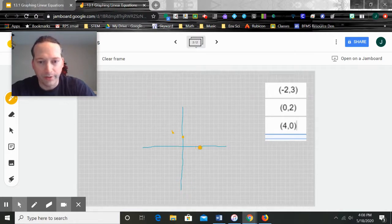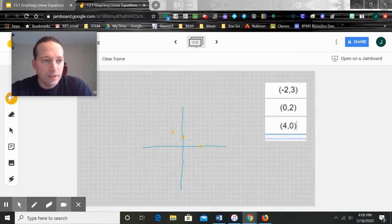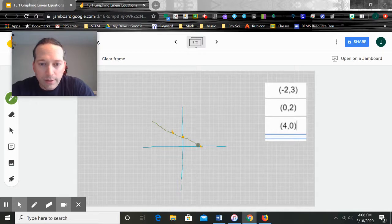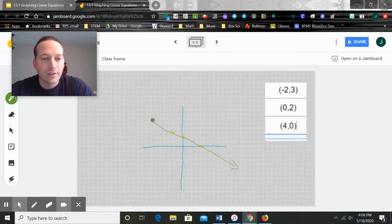And the last one is four, zero. So one, two, three, four. Is that right? Yes. Now, what do I do? Connect the dots. La, la, la. Connect the dots. Somewhat straight. There we go, it's pretty close. There's your line.